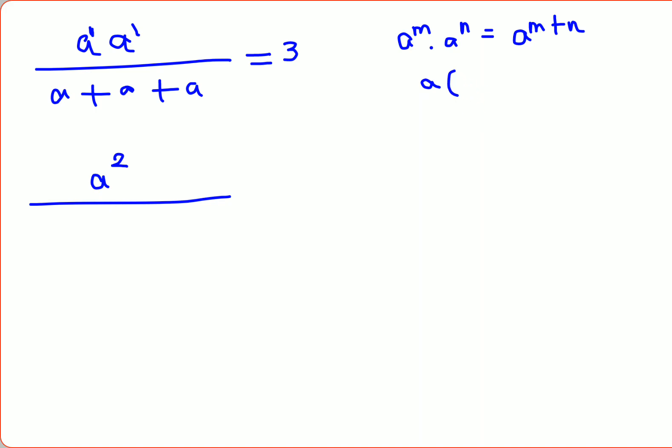If you take the a out, you're getting 1 plus 1 plus 1, so that gives you 3a. So this gets you 3a. And next, this value comes out to be 3.